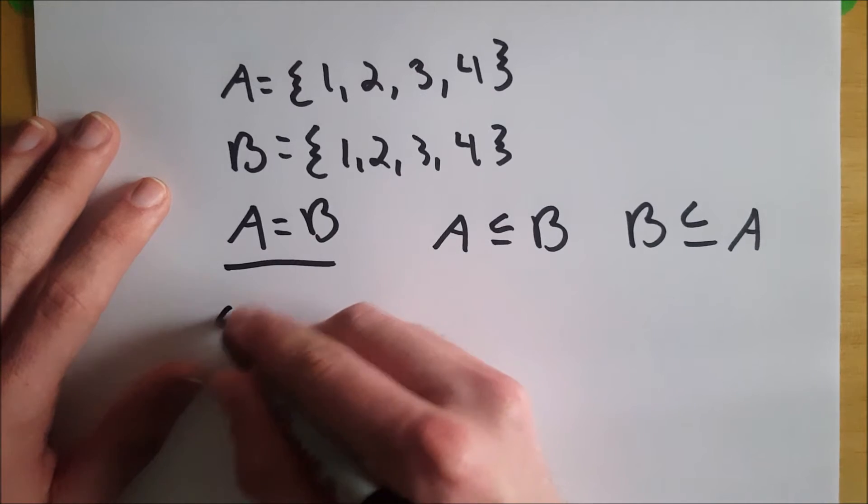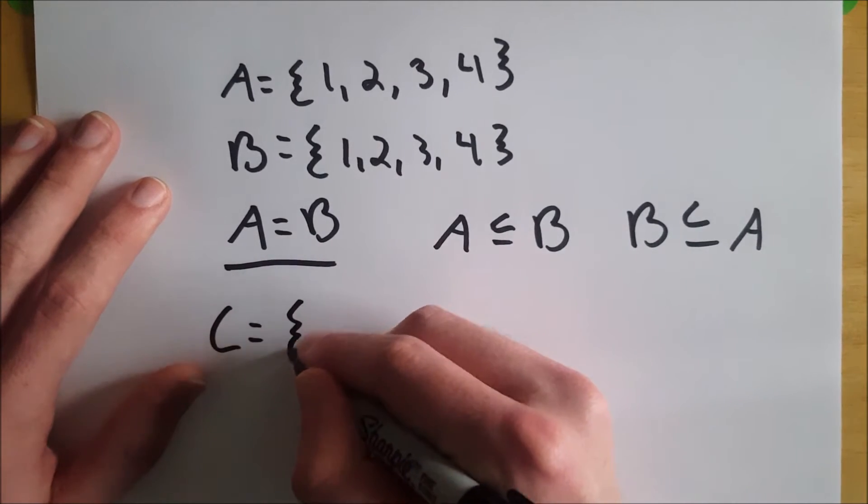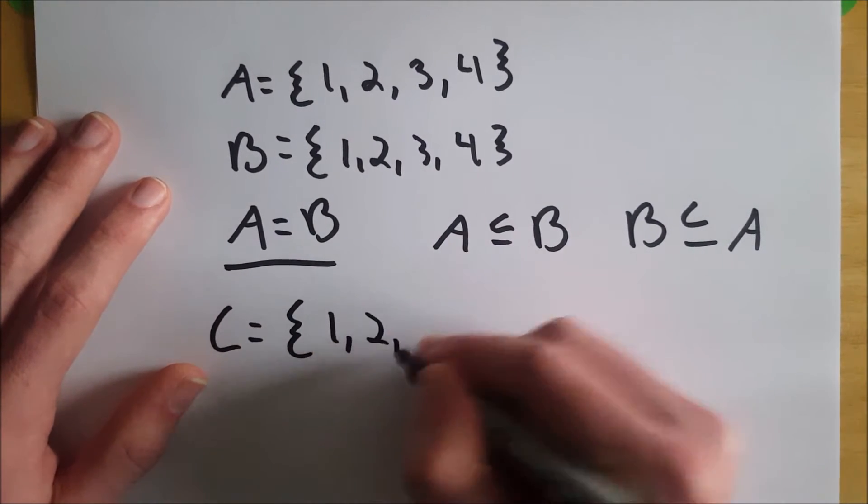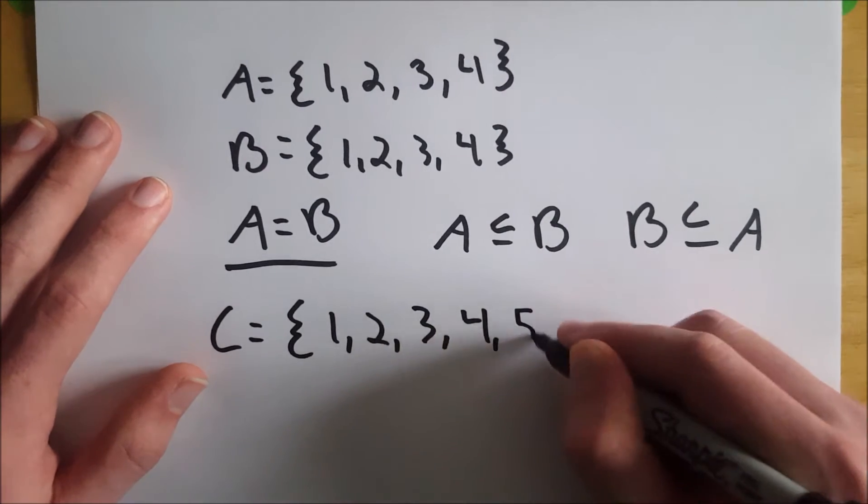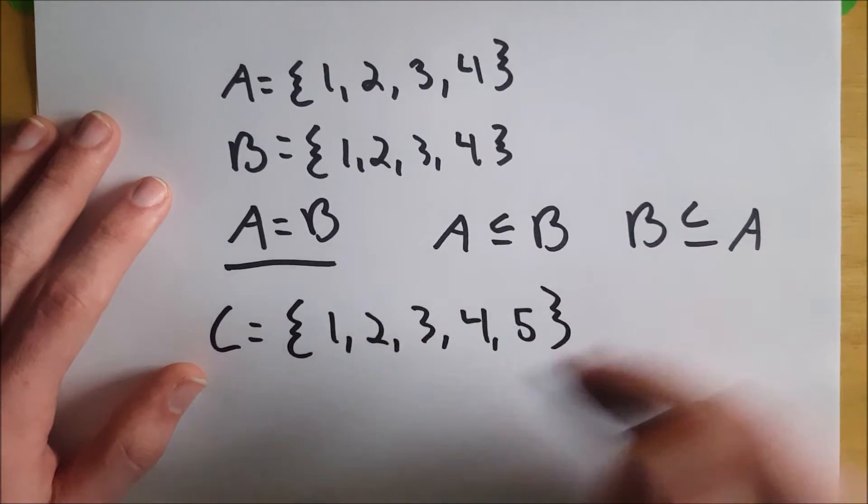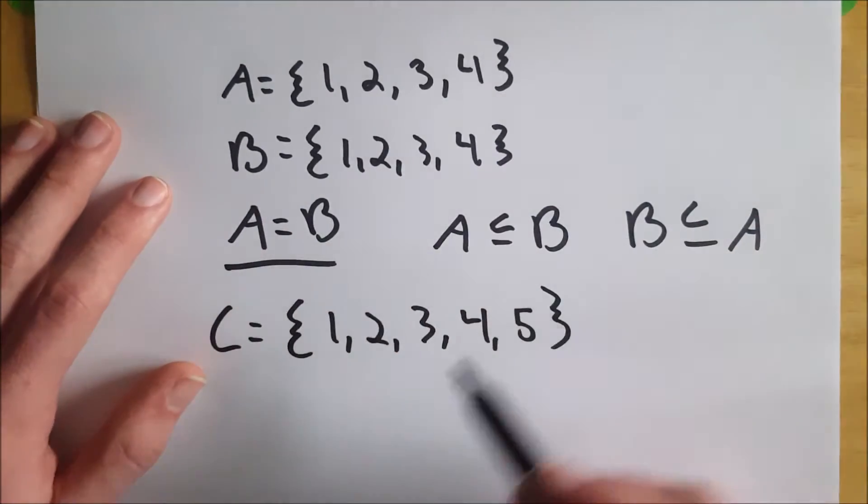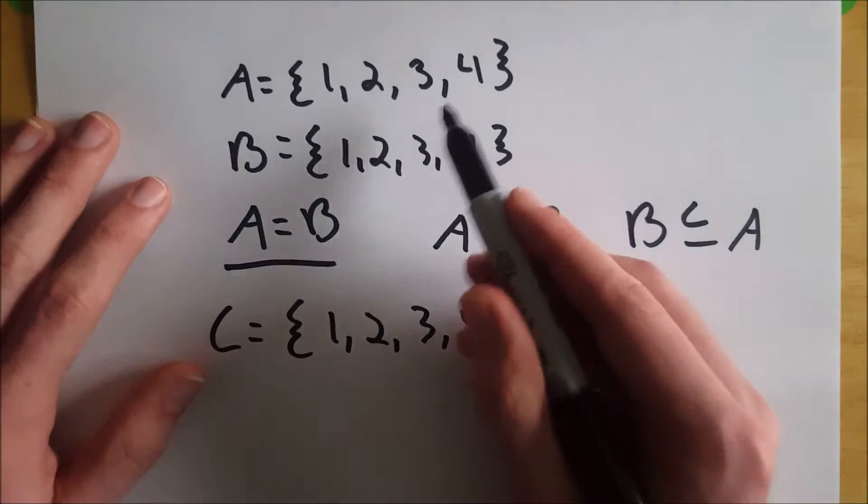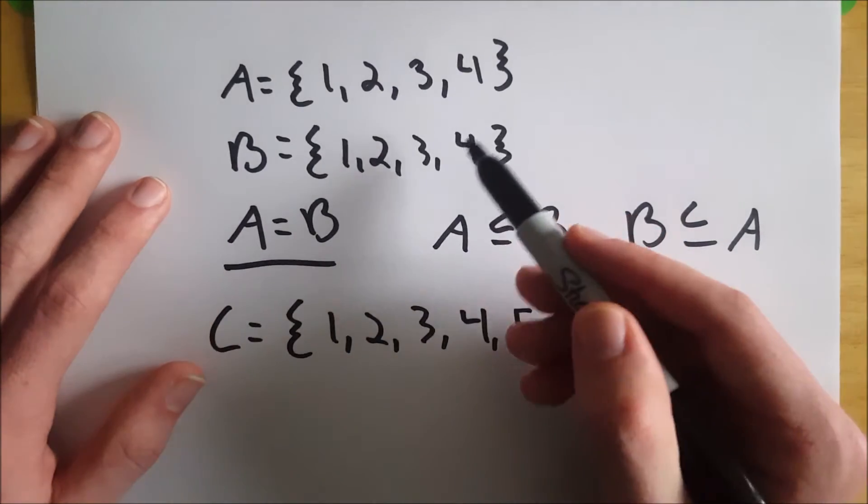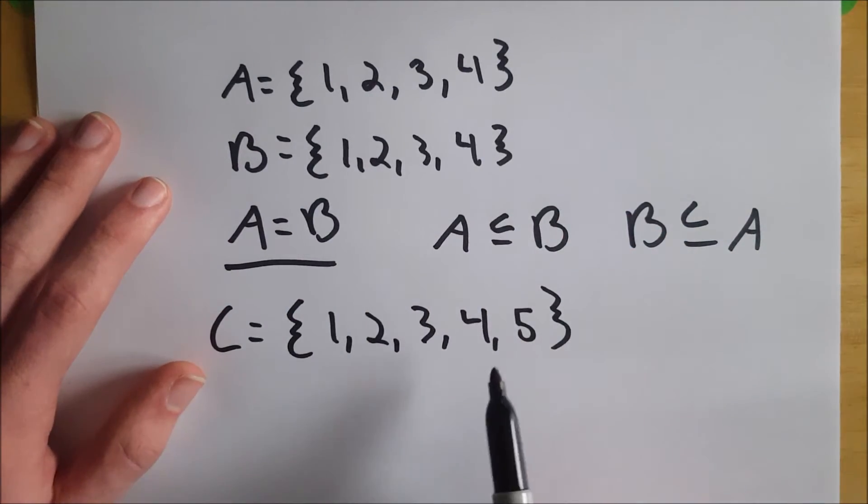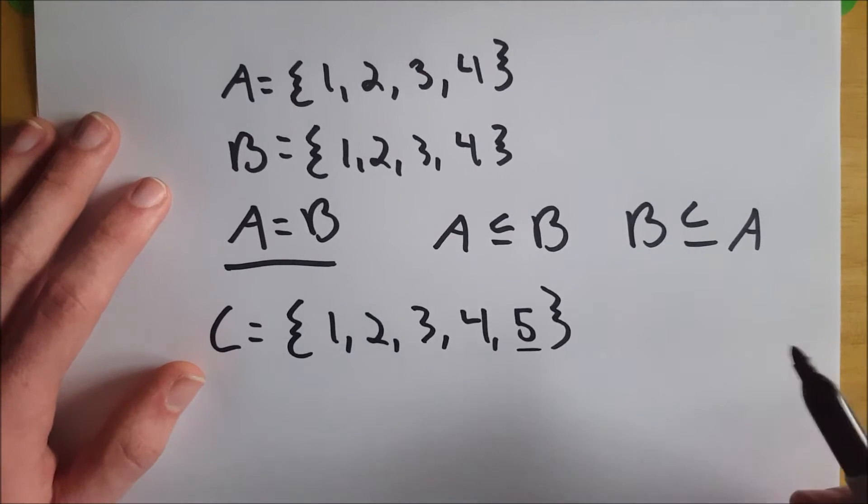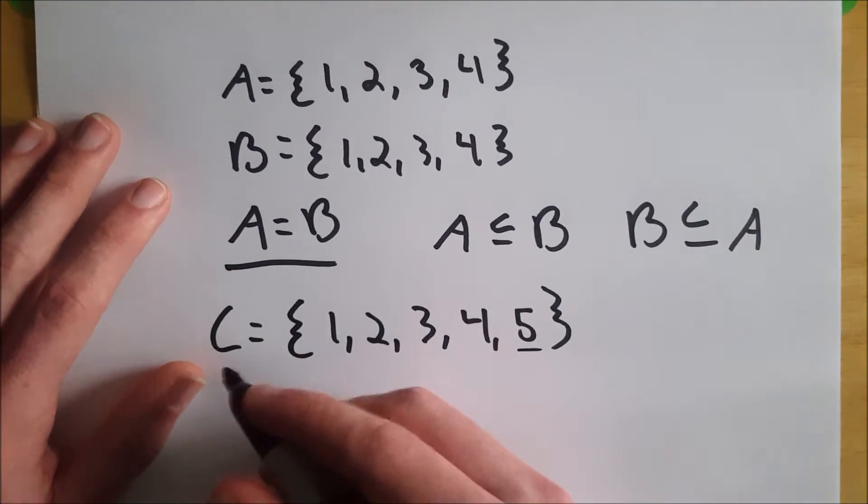So just for further clarification, let's define a set C that has 1, 2, 3, 4, and 5. Set C is not equal to A, nor is it equal to B, because it has 5, whereas A and B don't. A and B are subsets of C, but C is not a subset of them because of the 5 element that these two sets don't have.